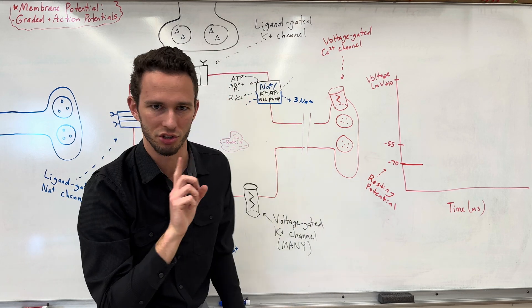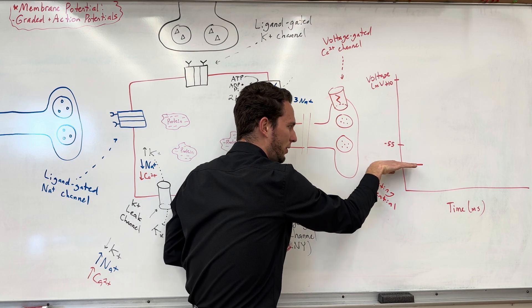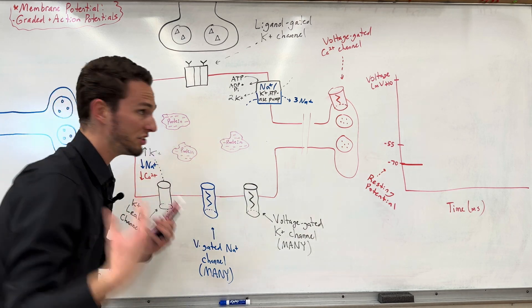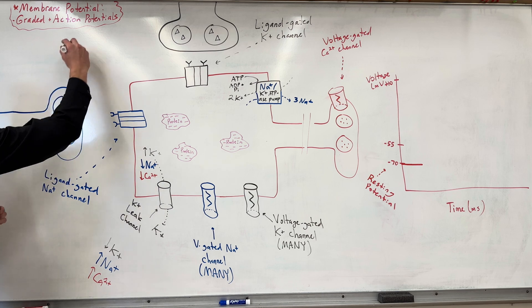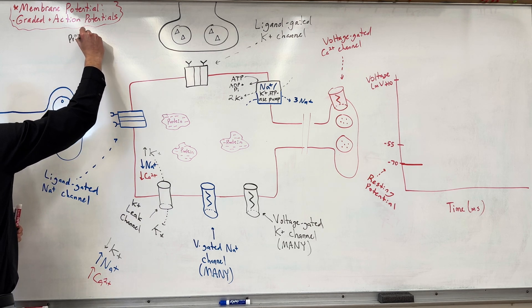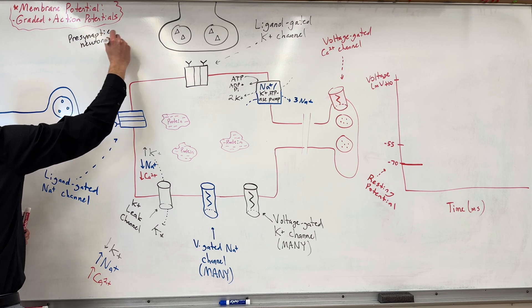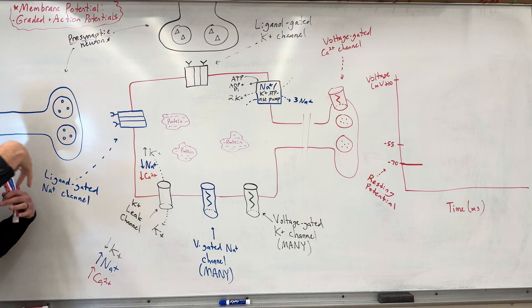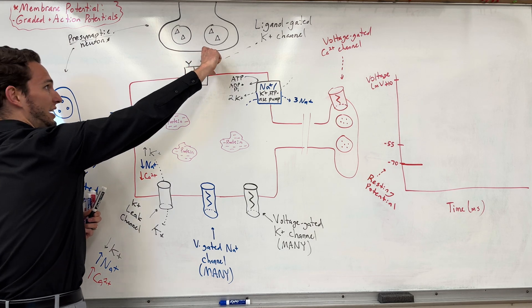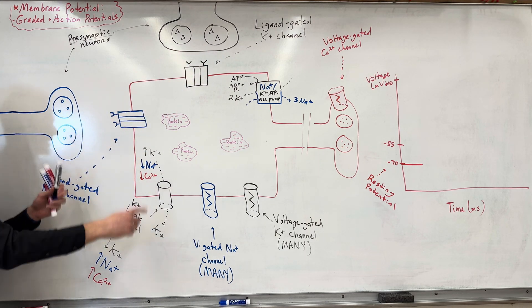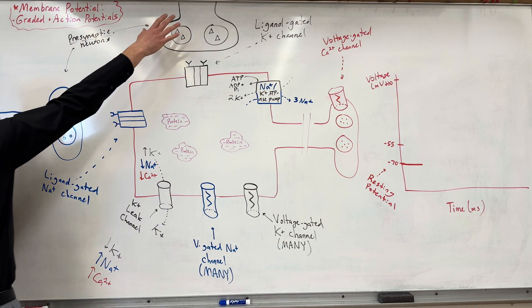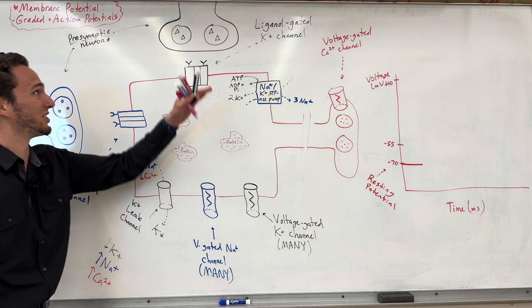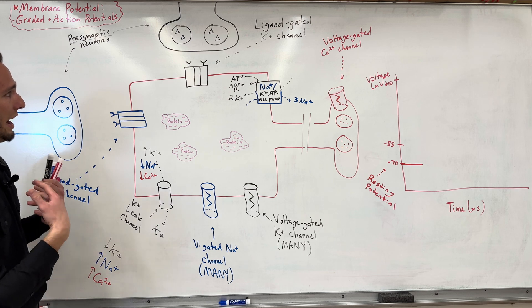Now we need to see how this cell can change its voltage — that's where we get into graded and action potentials. Graded potentials are basically when we're at rest and then slightly go up or down depending on the stimulus on this neuron. We've got two other players here called presynaptic neurons. 'Pre' means before, and 'synaptic' refers to the synapse — the space between two neurons where they communicate. So these two neurons come before the synapse and are going to mess with this cell's voltage.